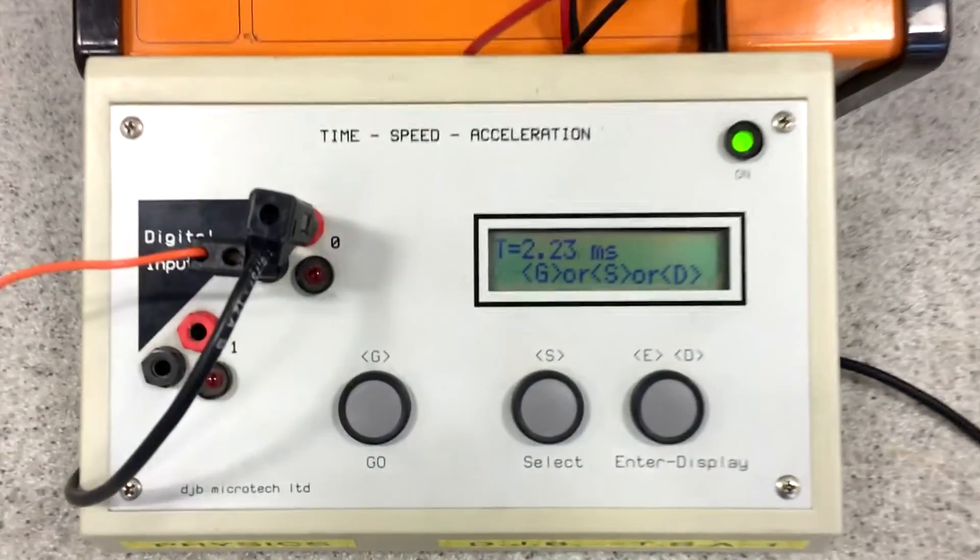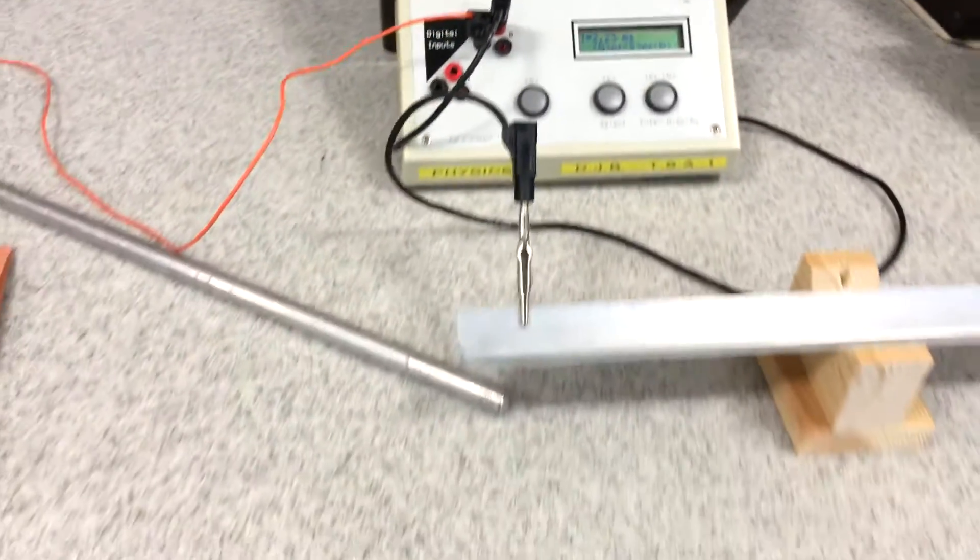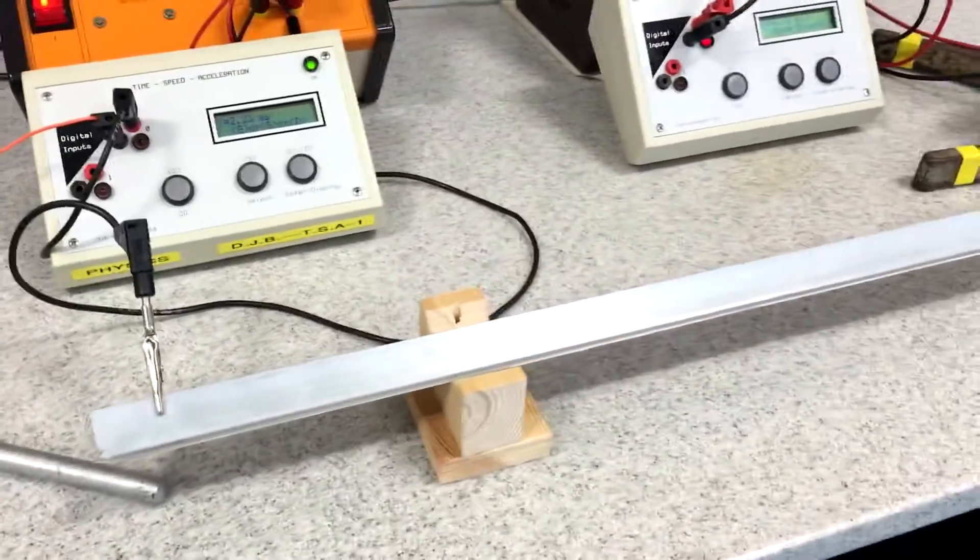Okay, here's the results. Time of contact: 2.23ms. That was the time that the cue was in contact with the ball.